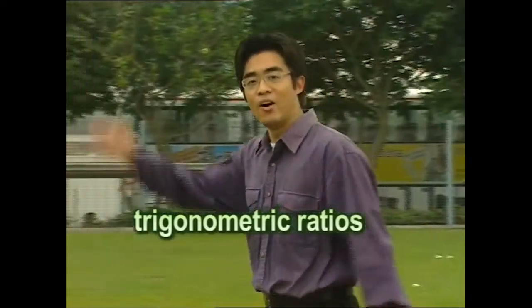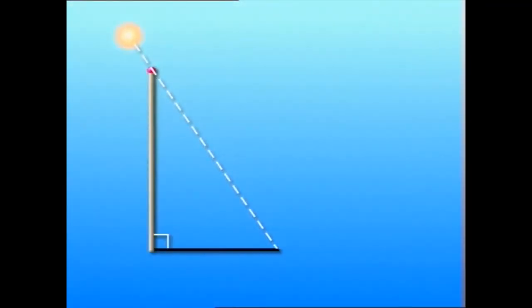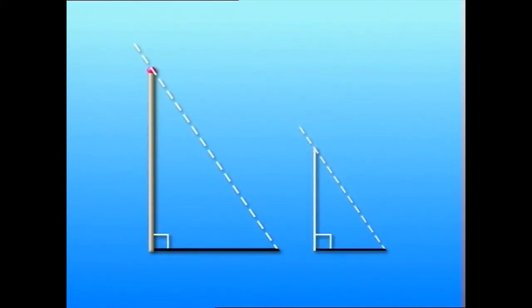So what are trigonometric ratios? The flagpole over here is very tall — I couldn't really climb to the top to measure its height. So how can I find out how high it is? It's not a difficult problem to solve. We can make use of the shadow of an object. We first measure the length of the shadow of the pole, then we place a much shorter rod on the ground and measure its height and the length of its shadow.